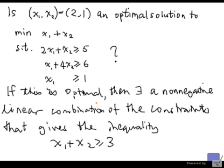If you know what the optimal value is, then there is a linear combination of these inequalities that will give us the inequality that has left-hand side equal to objective function and right-hand side equal to optimal value.